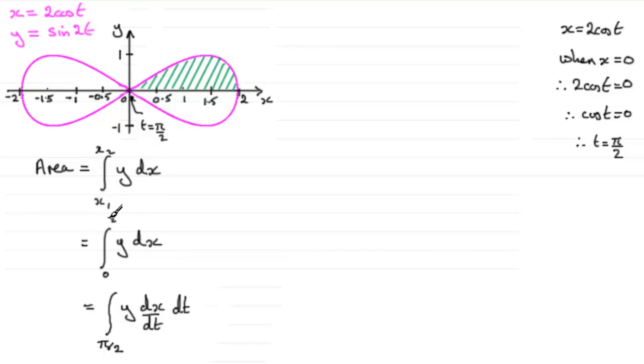What about when x is 2? When x equals 2, we've got 2 equals 2 cos t. So 2 cos t must equal 2. If we divide both sides by 2, cos t must equal 1, and t would have to be 0 in that case. So t equals 0.